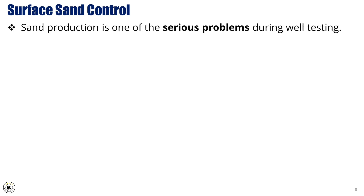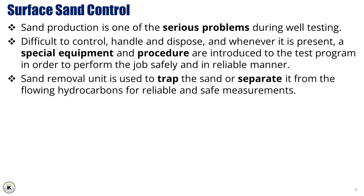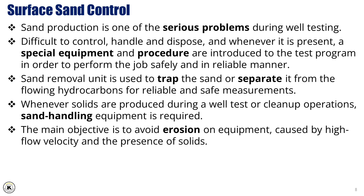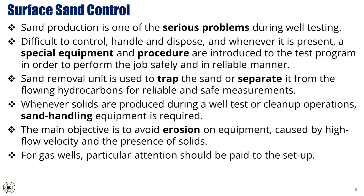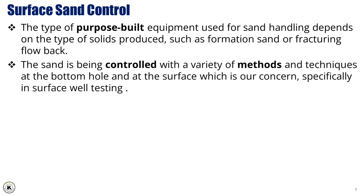Sand production is one of the serious problems during well testing. It's difficult to control, handle, and dispose of. Whenever it's present, special equipment and procedures are introduced to the test program to perform the job safely and reliably. A sand removal unit is used to trap sand or separate it from the flowing hydrocarbons. The main objective is to avoid erosion on equipment caused by high flow velocity and the presence of solids. For gas wells, particular attention should be paid to the setup. The type of equipment used depends on the type of solids produced, such as formation sand or fracturing flow back.